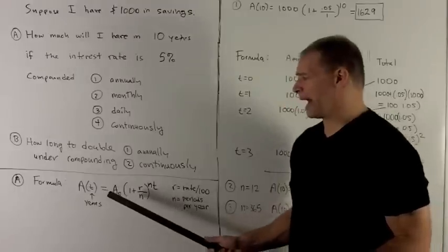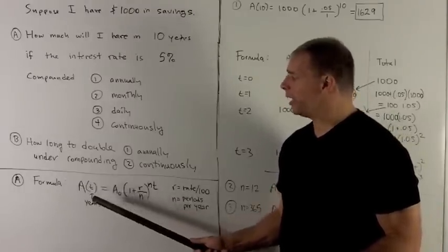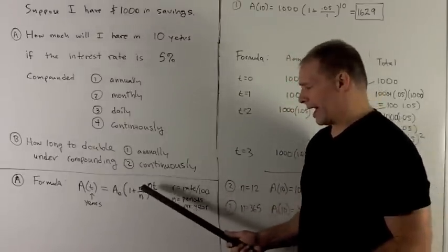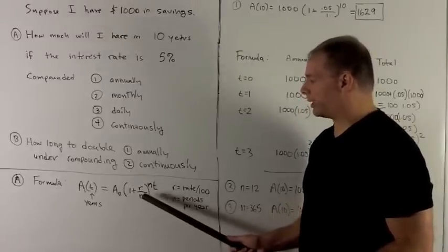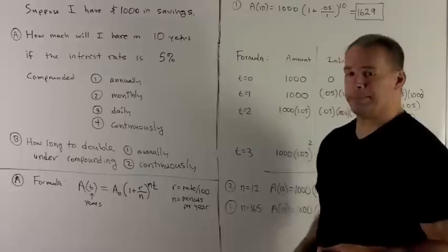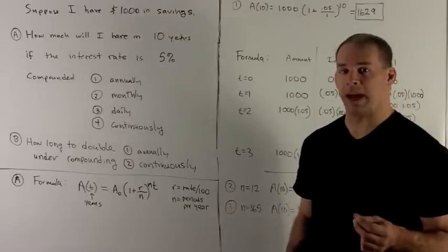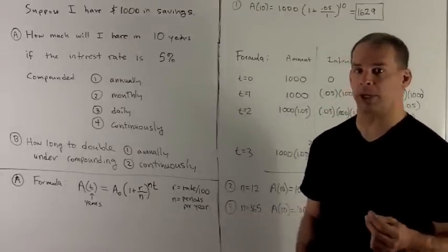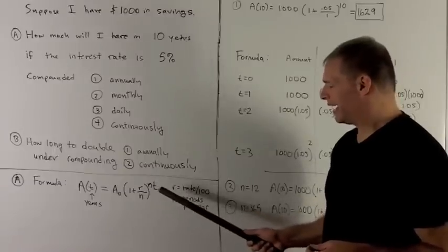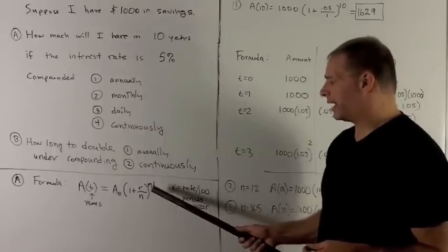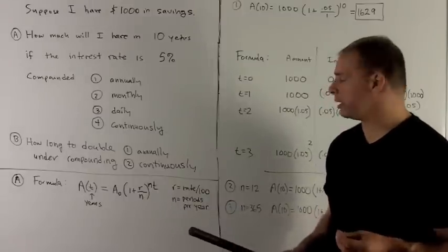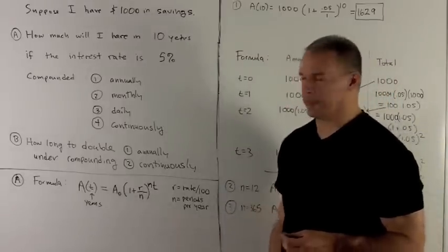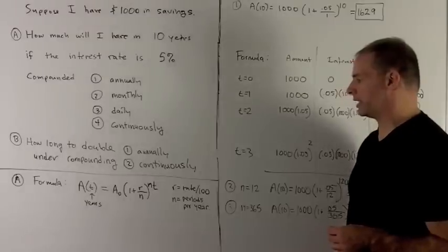My formula is going to be given by the amount at time t. T is going to be measured in years. We're going to have our initial amount A0. I have in here, this is 1 plus R over N. R is going to be the interest rate given as a percentage, divided by 100. And then N is going to be the number of times we compound per year, raised to N times t. N times t is the total number of times we compound in that period of t years.